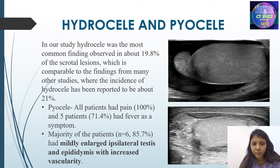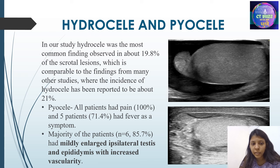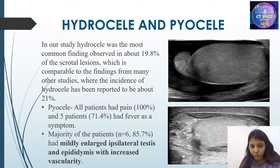Hydrocele and pyocele: in our study, hydrocele was the most common finding, observed in about 19.8% of the scrotal lesions, which is comparable to findings from many other studies where the incidence of hydrocele has been reported to be about 21%. Pyocele: all patients had pain and five patients had fever as a symptom. Majority of the patients had mildly enlarged ipsilateral testis and epididymis with increased vascularity.